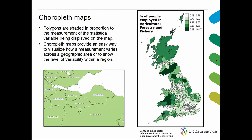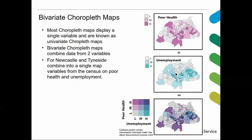These are a type of choropleth map called a univariate choropleth map, which displays only a single variable. You also get more complicated choropleth maps which display two variables at once — bivariate maps. Here we have one choropleth map showing poor health from low to high, and a second showing unemployment low to high, and we can combine those to create a map showing both variables together. On the bivariate map, very pale areas have both low unemployment and low poor health, while dark areas show both are high — a nice way of showing two separate choropleth maps as a single one.